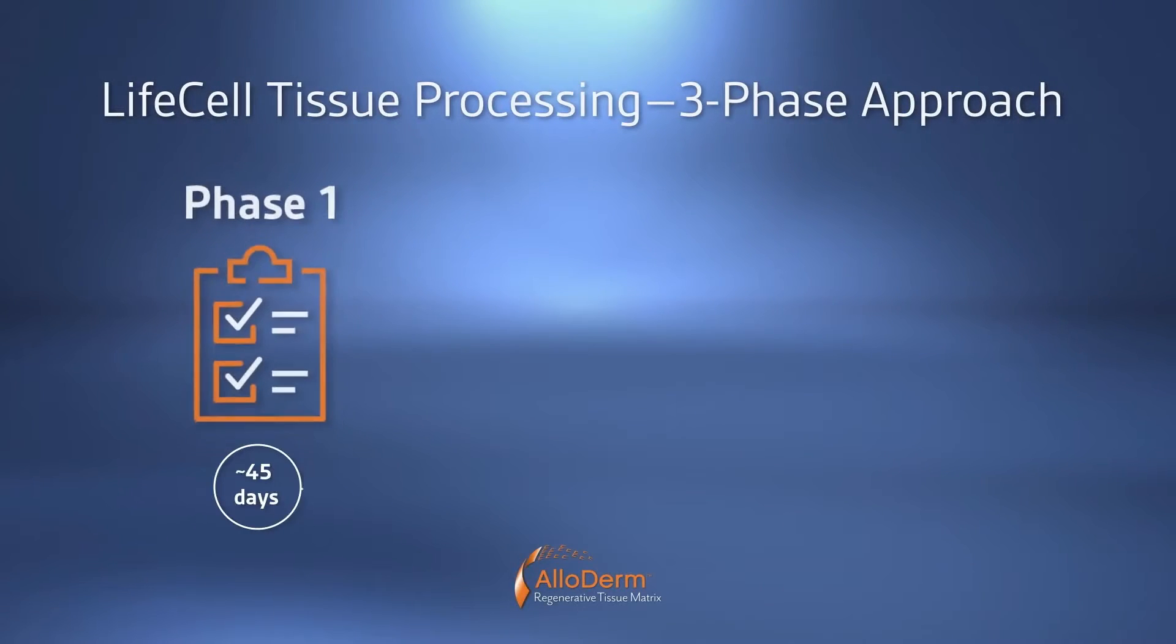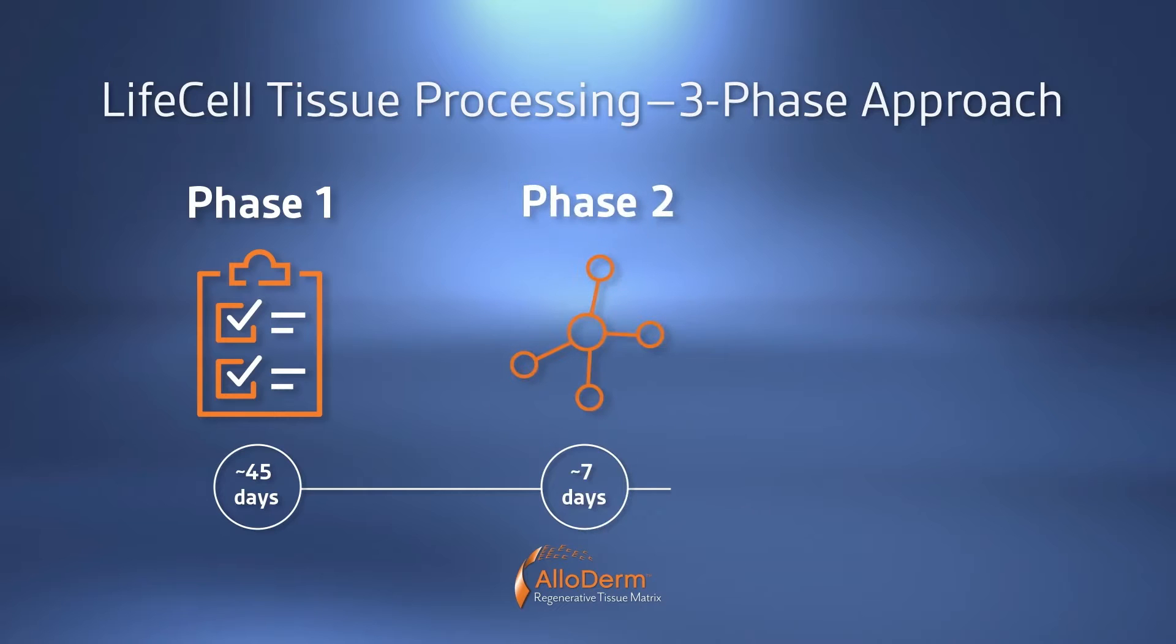Let's take a look at how Alloderm is made. The donated dermis undergoes proprietary LifeCell tissue processing, which consists of a multifaceted three-phase approach.